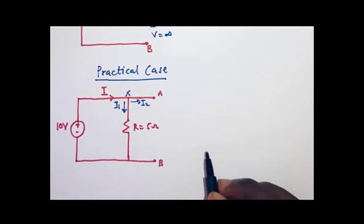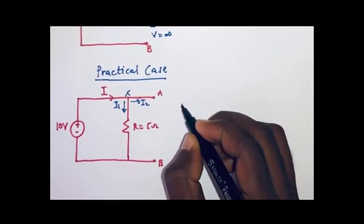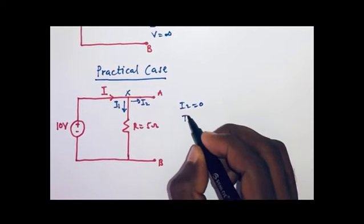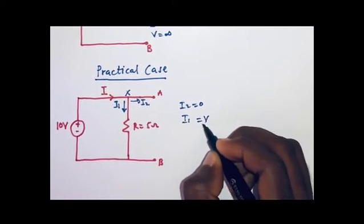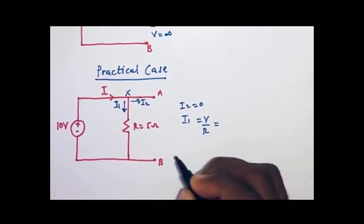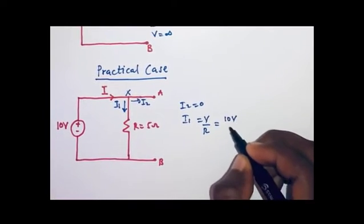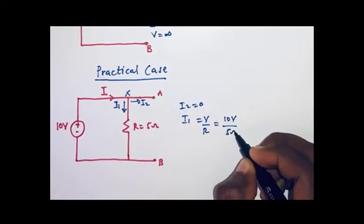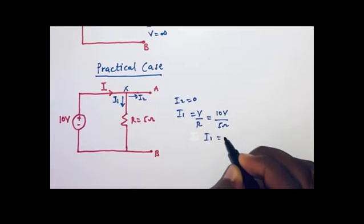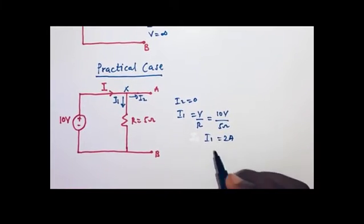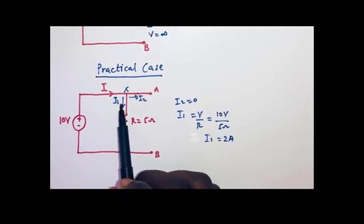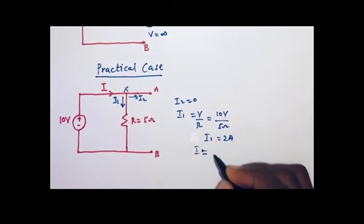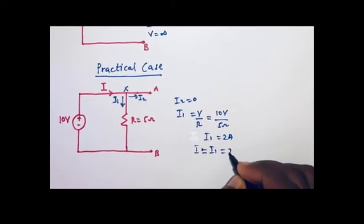Now, considering the value of the current I2 to be equal to zero, then we can find the value of I1 using Ohm's law. Using Ohm's law, I1 is equal to V divided by R. We have V to be 10 volts and R to be 5 ohms. Therefore, I1 is equal to 2 amperes. Because we have I1 being equal to I, then I, which is equal to I1, is equal to 2 amperes.